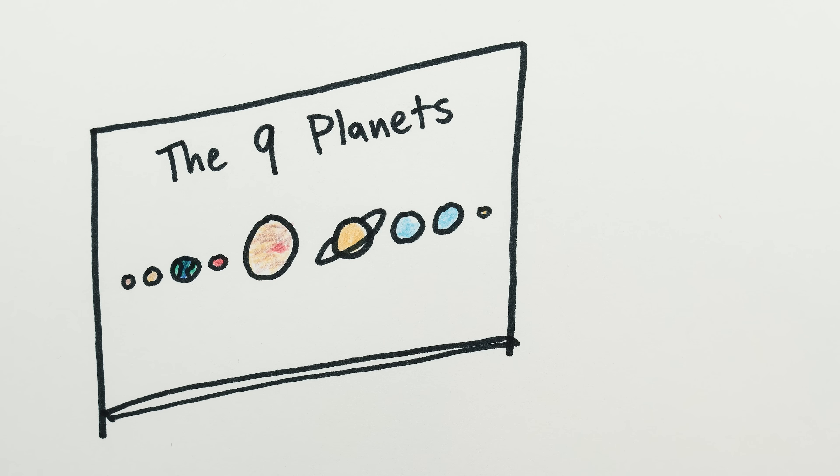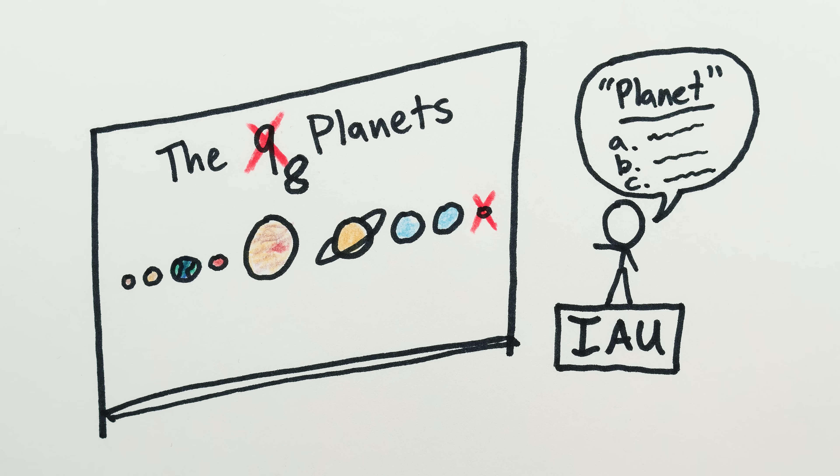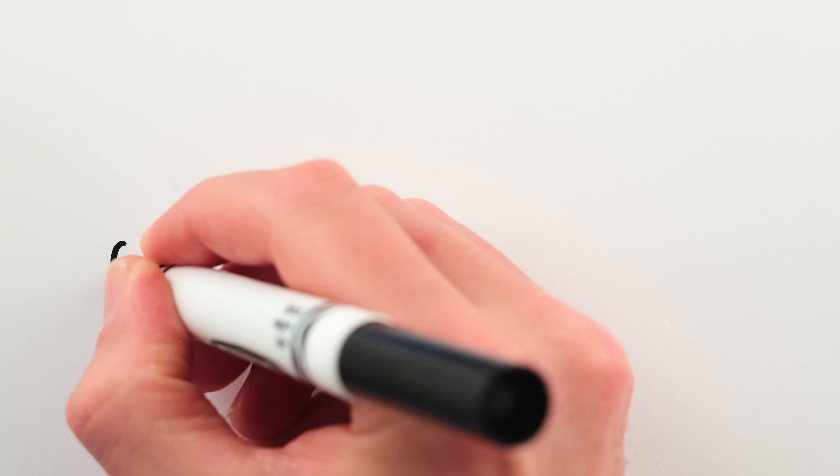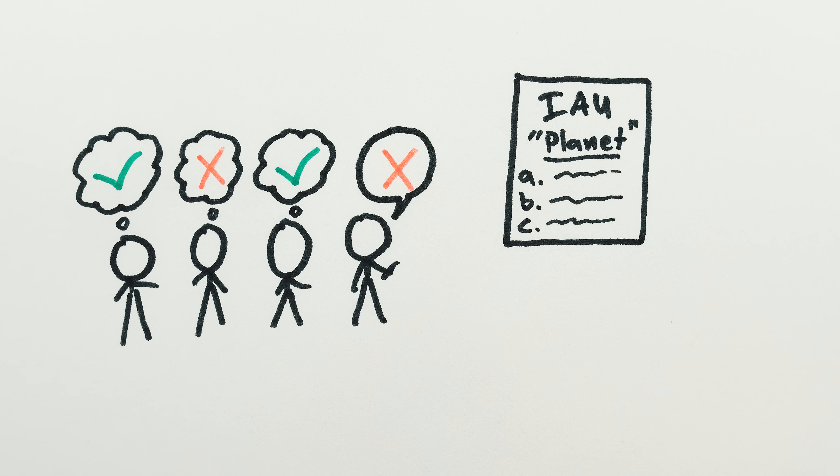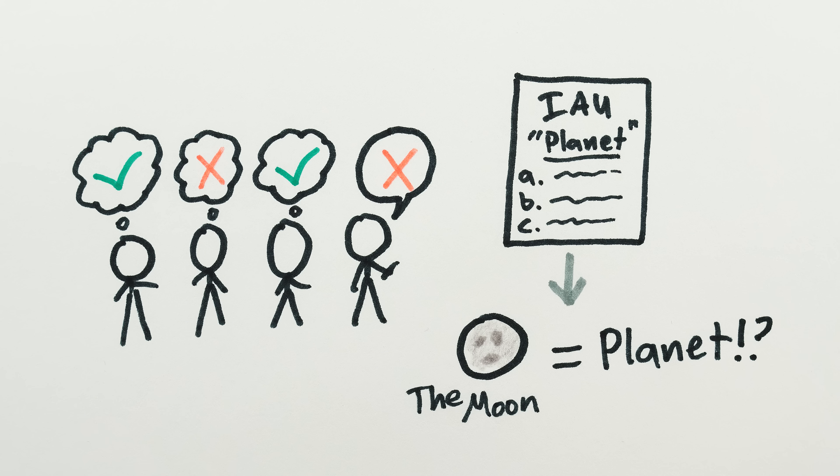In 2006, the International Astronomical Union passed its now infamous resolution that Pluto is not a planet. In fact, the resolution didn't just demote Pluto, but laid out a list of three criteria you must pass to be considered a planet. Whether or not you agree with the IAU's definition, it's possible to argue that according to the criteria in their definition, our Moon also qualifies as a planet. Here's that argument.